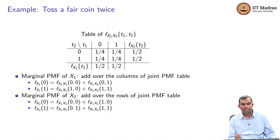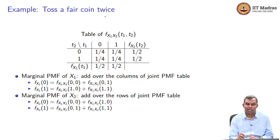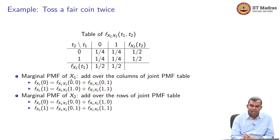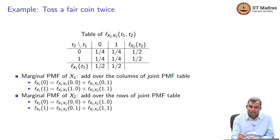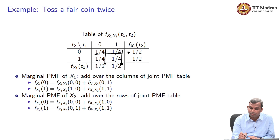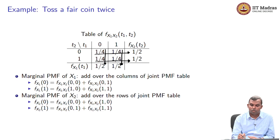Let us see examples to see how marginalization works. It is easiest to think of the table and do the marginalization with respect to the table. In the coin-toss-twice example, we had this table for the joint PMF with all entries 1/4. If you want the marginal PMF of X1, you simply add over the columns. So f_{X1}(0) and f_{X1}(1) are obtained by adding column entries: 1/4 + 1/4 = 1/2 each.